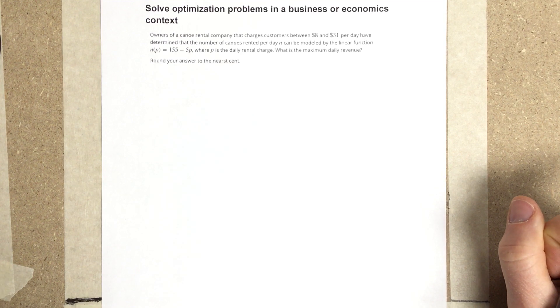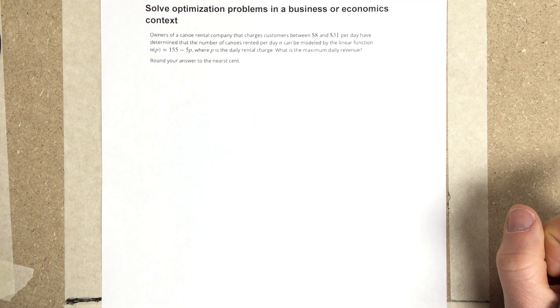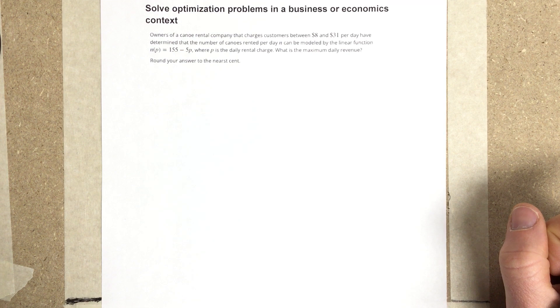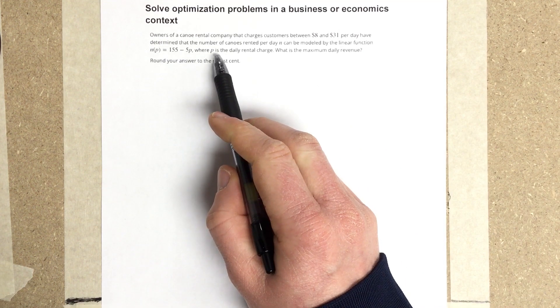It says owners of a canoe rental company that charges customers between $8 and $31 per day have determined that the number of canoes rented per day N can be modeled by the linear function N of P equals 155 minus 5 times P, where P is the daily rental charge.